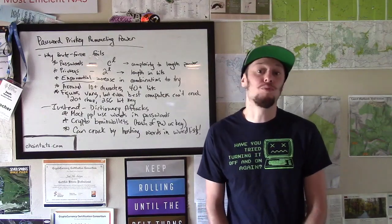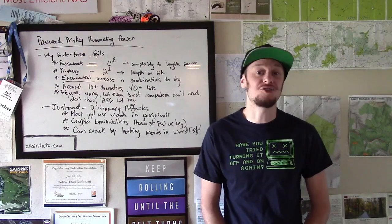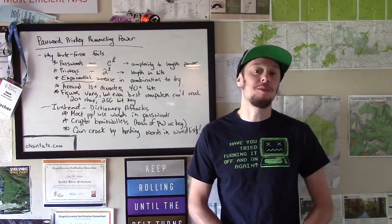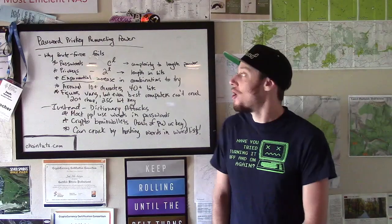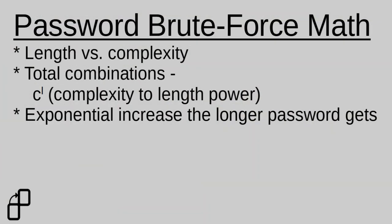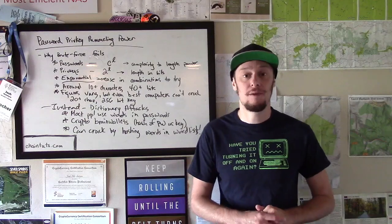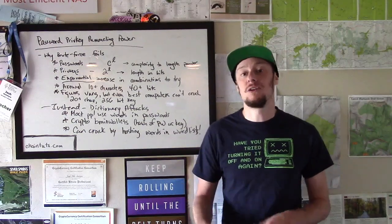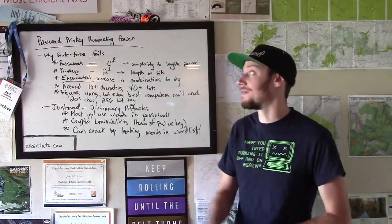Let's first talk about brute force — why it becomes impossible to crack large key spaces and how we can figure this out. If we're talking about cracking passwords, there's a simple formula for determining how many possible combinations we'll have to go through to exhaust that key space. This is C to the L — complexity to the length power. In terms of complexity, all the available characters we can use serve as the base in this formula. So if we're cracking passphrases with upper and lowercase letters and numbers, the total amount of possible characters serves as our base.